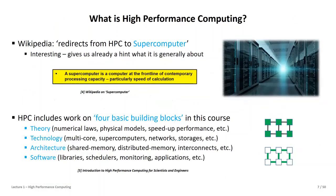The basics start with: what does high performance computing mean? In the community, we would always say performance computing has a very close relationship to a supercomputer. When you Google it, you'll be directed to: supercomputers basically compute at the front line of contemporary processing capacity — particularly the speed of calculation, which refers to 'high performance.' These are really intertwined, and all the supercomputers in the world are HPC machines.